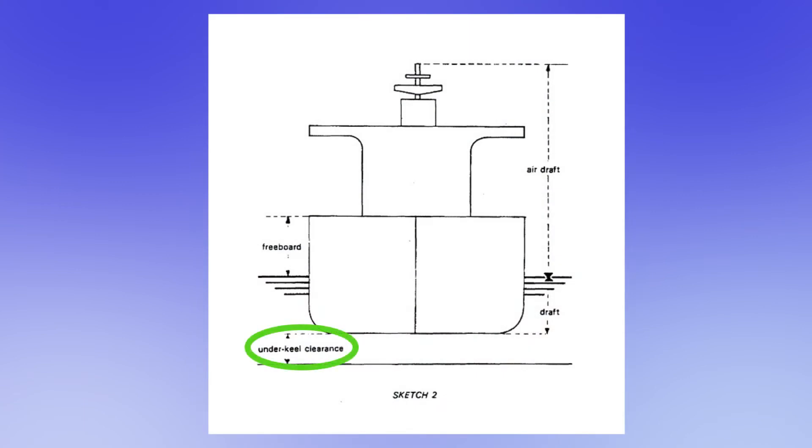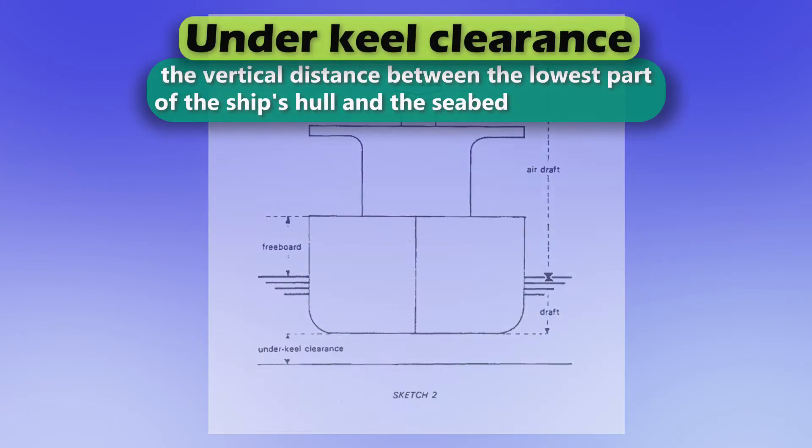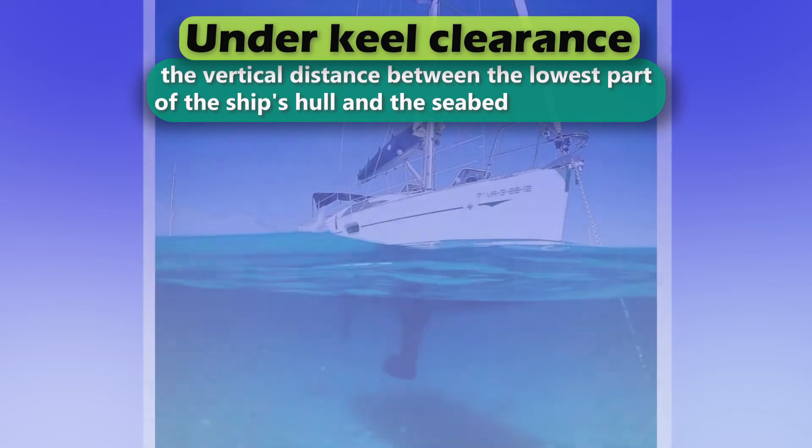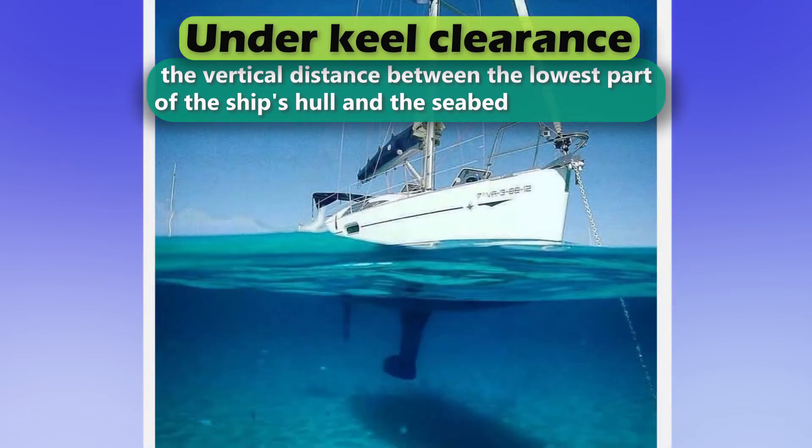Under keel clearance. The vertical distance between the lowest part of the ship's hull and the seabed.